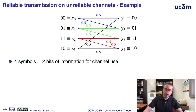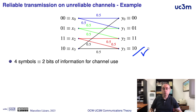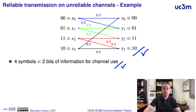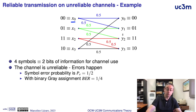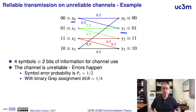If we have, for instance, this discrete memoryless channel with 4 transmitted symbols and 4 received symbols, this means that we can transmit 2 bits per channel use. This is a highly unreliable channel because errors happen with a relatively high probability. When we transmit a given symbol, half of the times we receive the wrong symbol, so the probability of error is relatively high. However, if we analyze why the errors happen, it is possible to find a trick to obtain a reliable transmission.